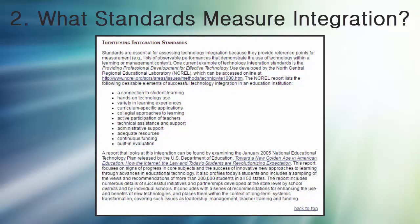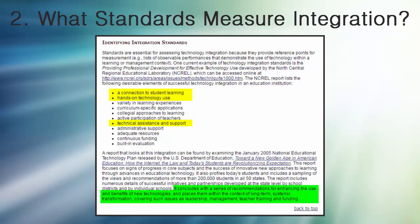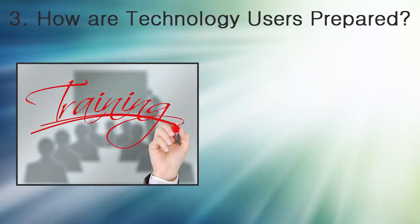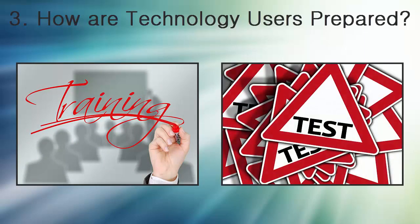What must educational organizations do to begin the integration process? They must determine technology integration standards to measure progress. The NCREL report mentions components that can be used to measure success. Some of these components include creating learning connections in students, having to apply learning by using technology, and having adequate technical support. Once standards have been determined, it is up to educational technology leaders to meet those standards. The NCREL report also offers recommendations for successful application of the latest technologies.